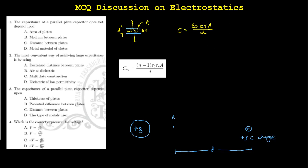Let's start with the first MCQ. The capacitance of the parallel plate capacitor does not depend on: area of plate, medium between the plates, distance between the plate, or material of the plate.